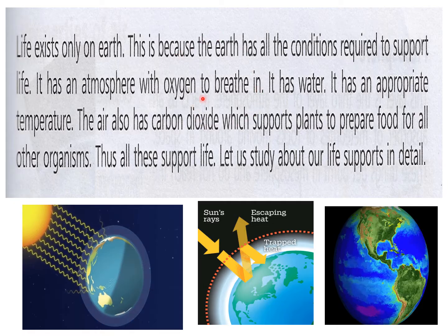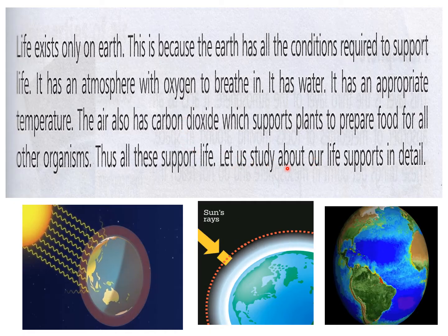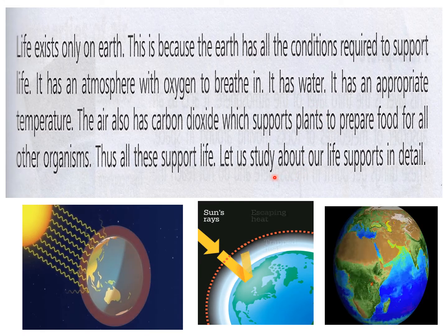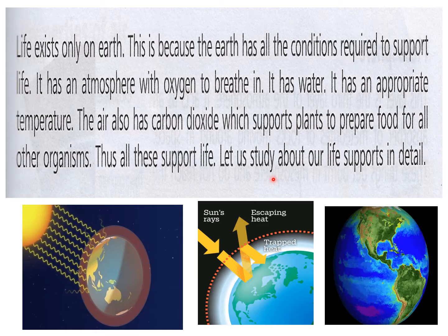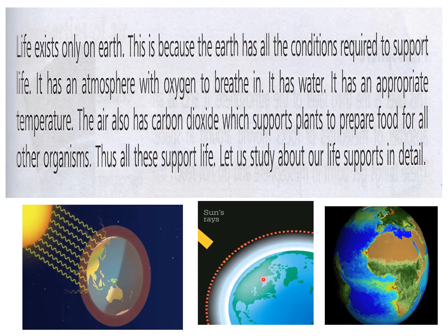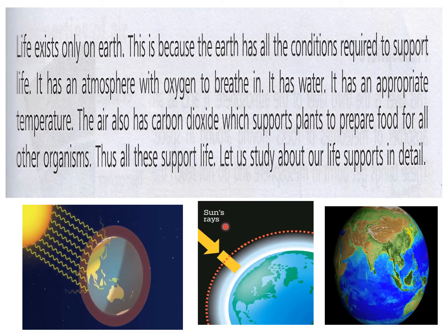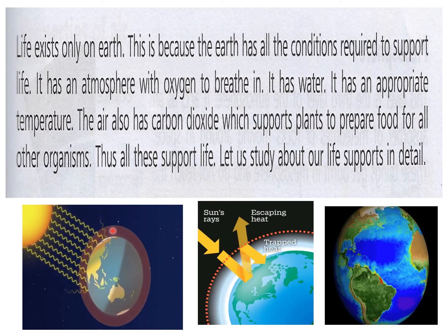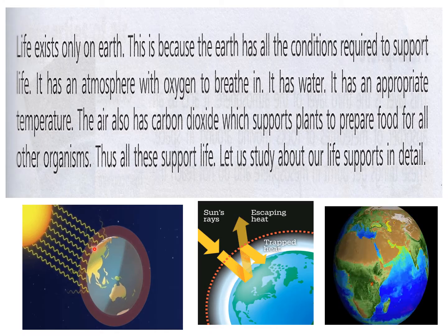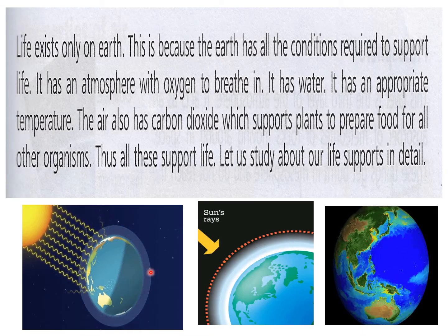All these things support life on earth, and we will study our life supports in detail. In this picture you can see how sunlight falls on the earth, and due to the atmosphere some heat is trapped while the extra heat is reflected back. The atmosphere extends up to 10,000 kilometers, and because of the ozone layer, only some sun rays can come inside, protecting us from UV radiation.